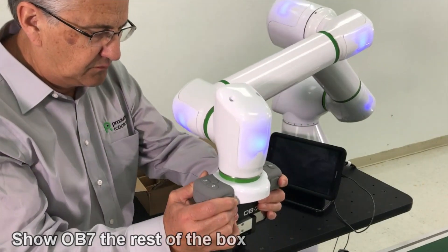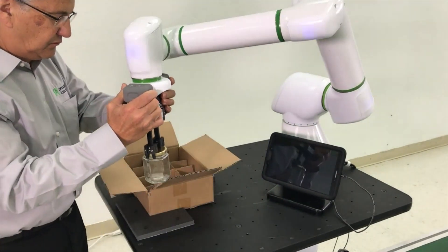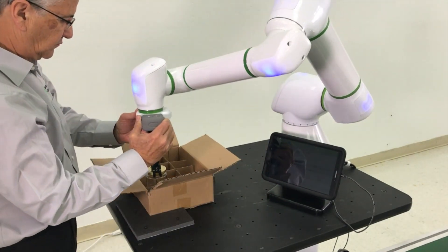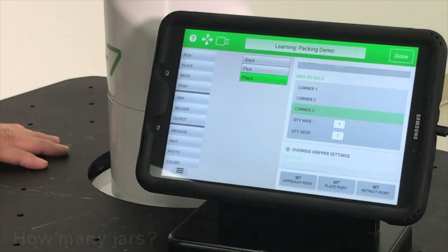Then select the third corner and pick up the next jar. And move it to the third corner and press place again. Corner 3. Pick position. Learn.